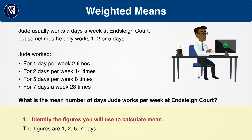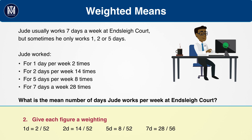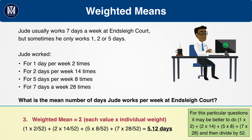First, identify the figures you will use to calculate the mean. The figures are 1, 2, 5, and 7 days. Then give each figure a weighting. There are 52 weeks, so we can give weights as fractions of 52. For example, 1 day has a weighting of 2 over 52, and 2 days has a weighting of 14 over 52. Plug the values and the weights into the weighted means formula. For this question, you can save time by dividing by 52 at the end: do 1 times 2, plus 2 times 14, plus 5 times 8, plus 7 times 28, and then divide by 52. This will save you time rather than multiplying each fraction by 52 each time.